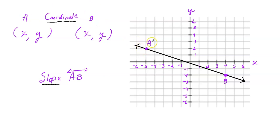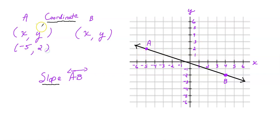Welcome back. Here's point A. Starting at the origin, I have to move to the left horizontally five units, so it's negative five — that's my x value. Then how many units do I move vertically in the y-direction? That would be two units up. So the y value is two. The coordinate of A is negative five, two. Hope you got that right.